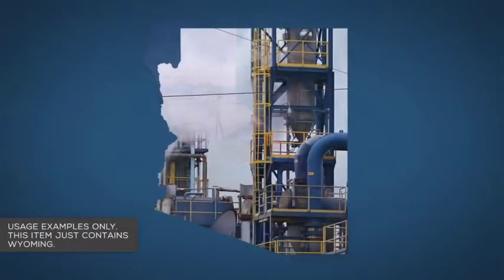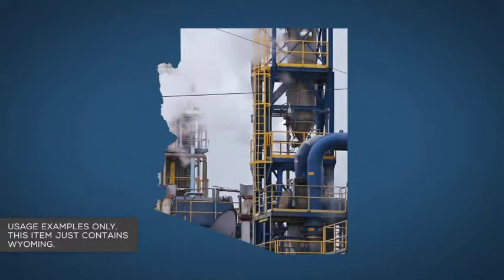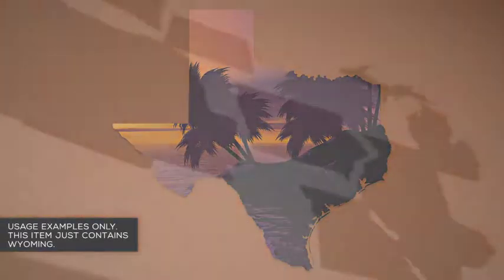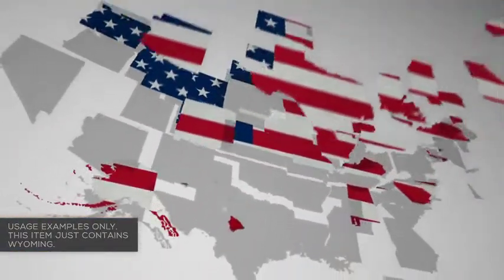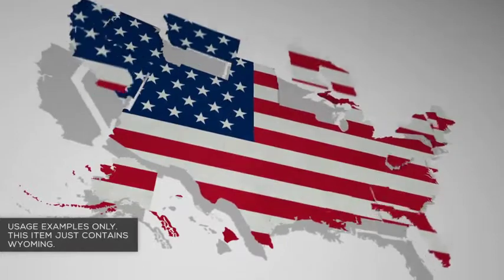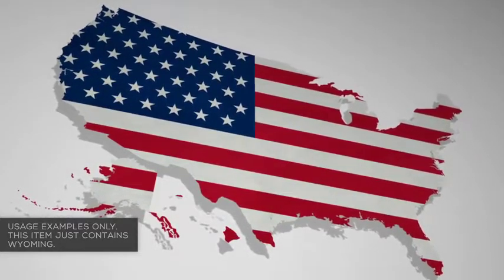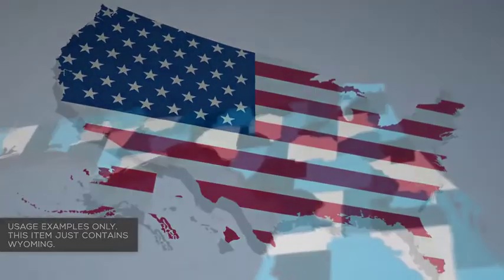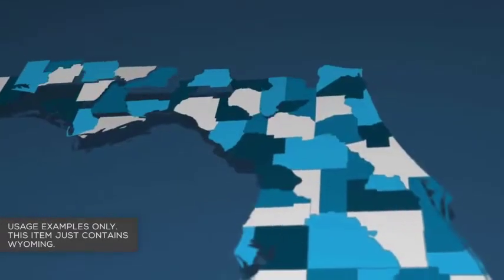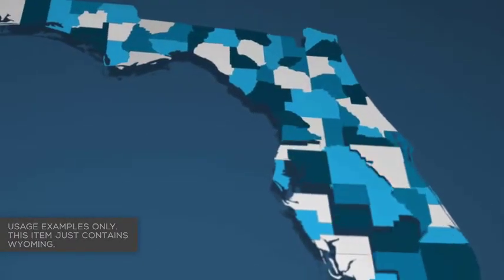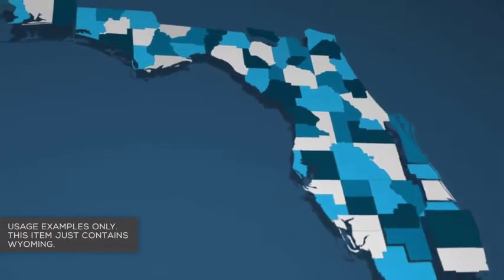Use your own content as a texture for the state — images, footage, whatever you need. Highlight counties with different colors to match your branding and to represent whatever you need the map to represent. Or get creative and add your own animations and images into the texture layers.